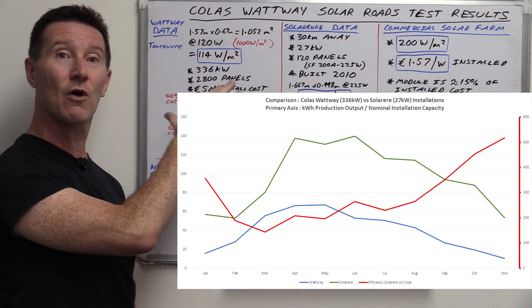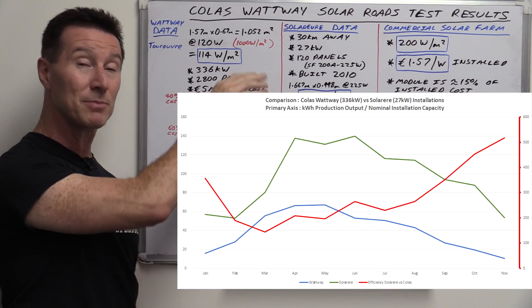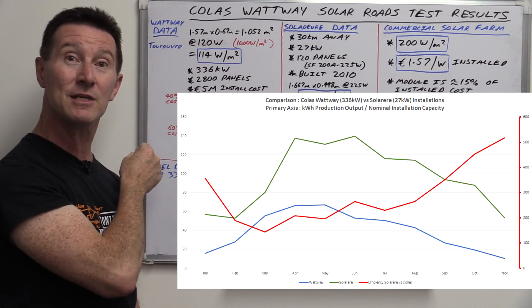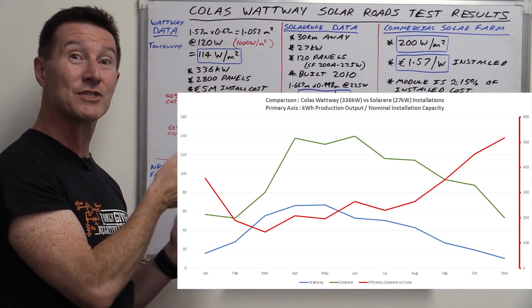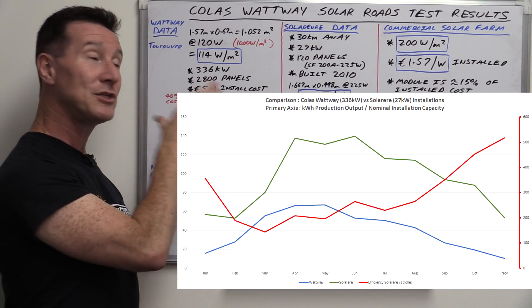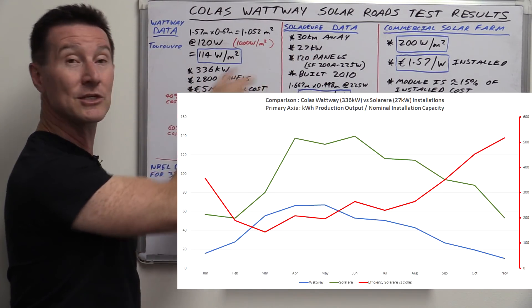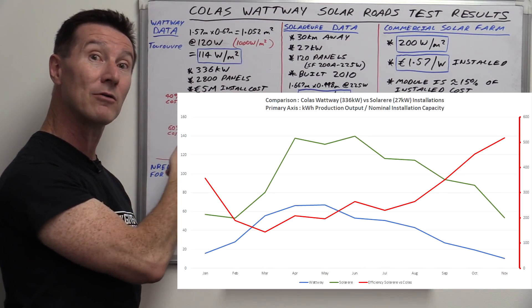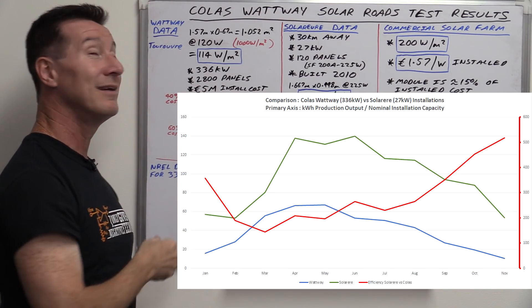And remember that they're only 30 kilometers apart, so over the span of that 11 months, the weather should be roughly similar between the two, the solar irradiation between the two should be very similar, and everything else. So it's a pretty good adjusted for system size, apple to apples comparison. And the Colas Wattway one is pretty terrible.